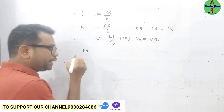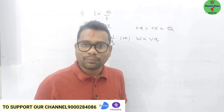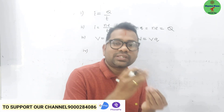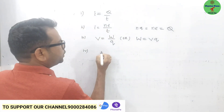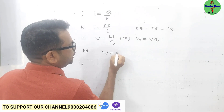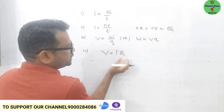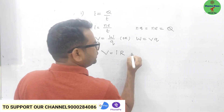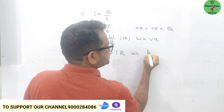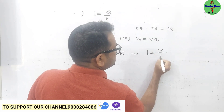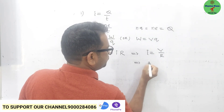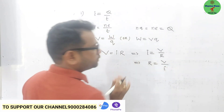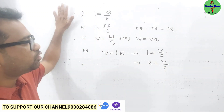The fourth formula is based on Ohm's law, which relates potential difference and current: V is equal to I into R. When resistance and current are given, we use this to calculate potential difference. If they ask for current, then I is equal to V by R. Sometimes they may ask for resistance, so R is equal to V by I. These are the formulas we have to remember.